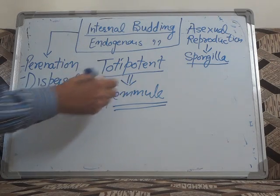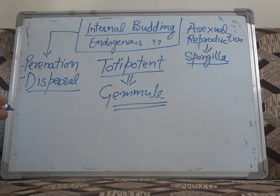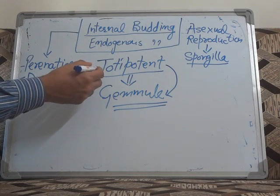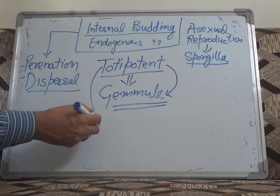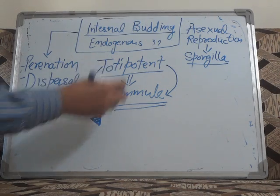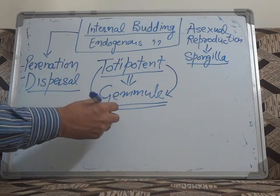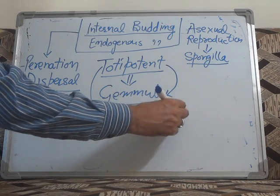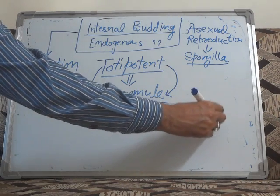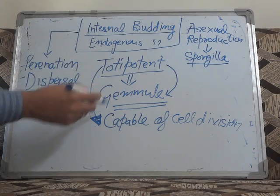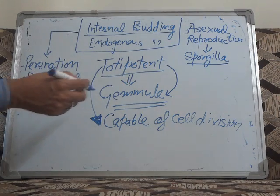Let's discuss the structure of the gemmule and how gemmule formation takes place. As we said, totipotent cells will form the internal bud known as the gemmule. Totipotent cells are those cells which are capable of cell division — they can divide and after division they can produce new bodies. These totipotent cells will initiate gemmule formation.